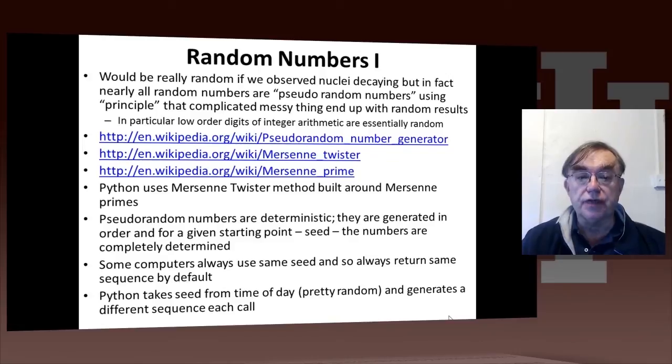The interesting feature of pseudorandom numbers is that they're totally deterministic given their starting point. Namely, they're generated in order. Given one pseudorandom number, you generate a new pseudorandom number determined by that original one, or possibly in a more complicated version, by multiple original ones. And for those starting points, the numbers are completely determined.